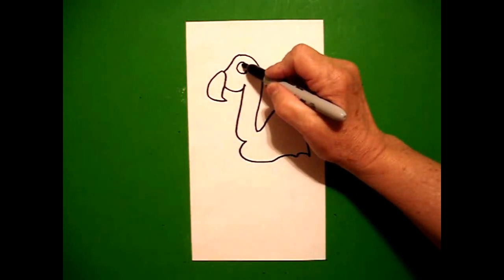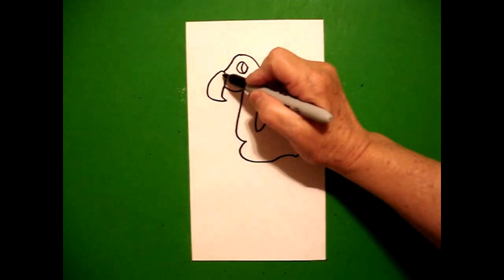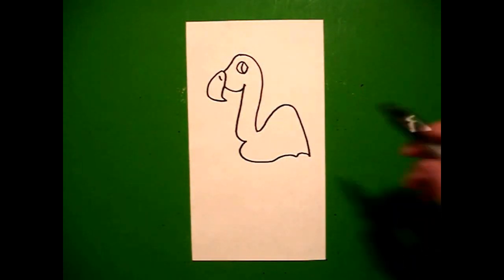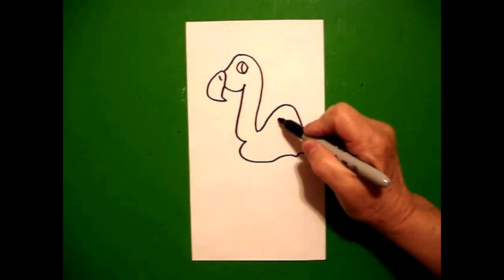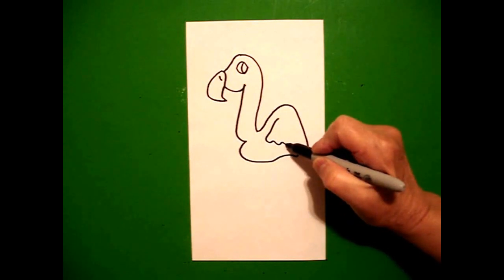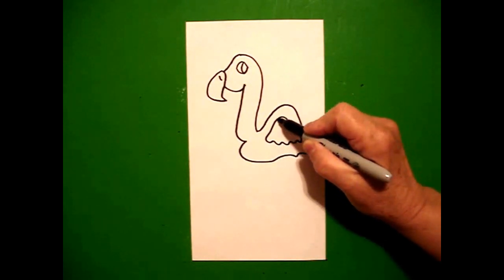And right inside I draw another curve line over. Come back to this space and just put a little straight line. Come inside this space and draw a curve line down, wavy, wavy, wavy line up, curve line up, connect.